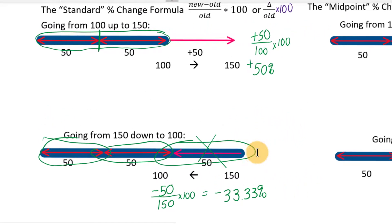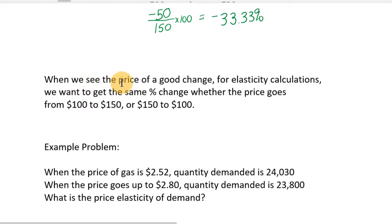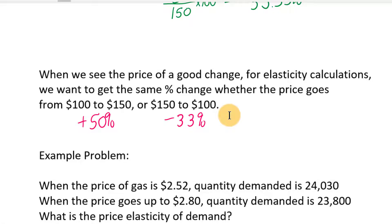What we don't like about this when doing an elasticity calculation is: if we're studying how a change in one thing — say price — affects a change in another — say how much people buy — we really want to study those two points together. We don't want there to be a difference between the percent change going each direction. But here, going from 100 up to 150 is called a 50 percent increase, while going from 150 back down to 100 is called a 33 percent decrease. Is there a way to make those two percent changes the same? That's where the midpoint method comes in.